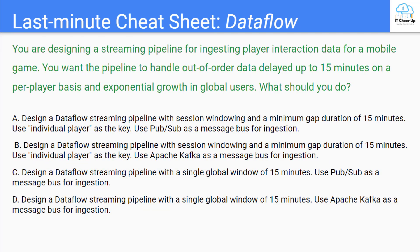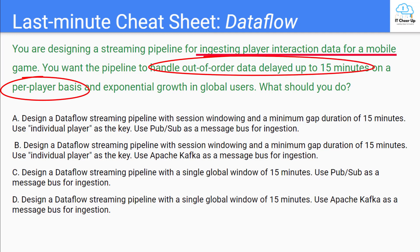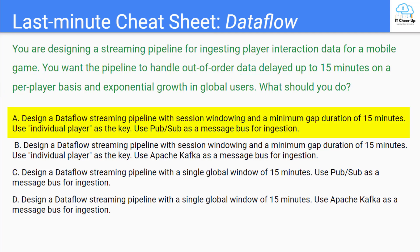Please read the question first. Pause the video and try to answer it yourself. The keywords of this question are: streaming pipeline for mobile game, handle order of data delayed up to 15 minutes, and per player basis. We can't use a single global window on a per player basis. The question didn't mention any on-prem Kafka messaging or specific messaging requirement. So the correct answer is A: choose a session window with a minimum gap duration of 15 minutes and use PubSub as a message bus for ingestion.